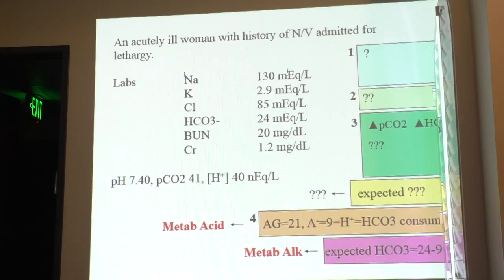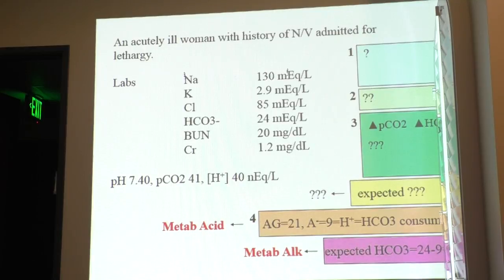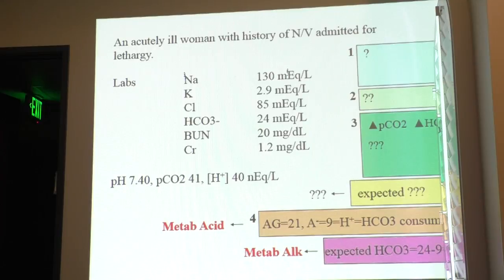In this case, how would you have avoided sending that person home? I would not have done the pH in the first place, but I would have calculated the gap. Let's say I just ordered the Chem 7 — I look at the gap and it's like, oh shoot, this lady has a huge gap. At that point I would have done a blood gas. The teaching point is: always calculate the gap.